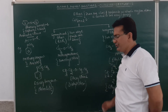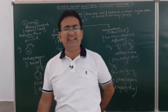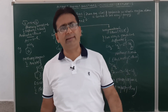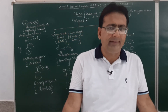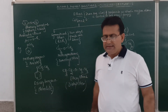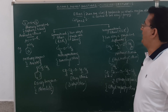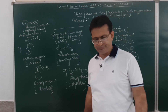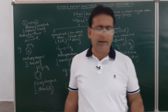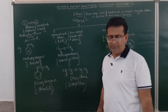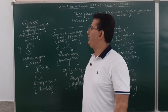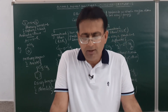So this is a brief introduction to ethers. In this chapter we will be discussing alcohols, phenols, and ethers. As far as ethers are concerned, they have the general formula CnH2n+2O. They can be symmetrical or unsymmetrical ethers.